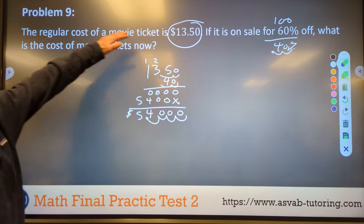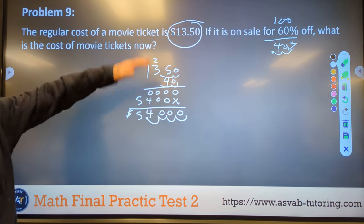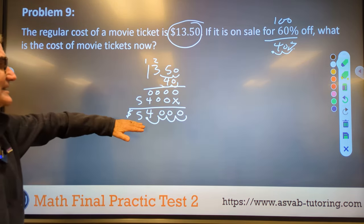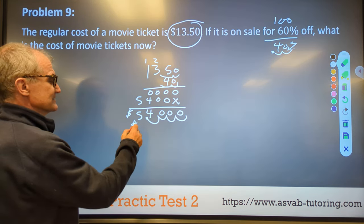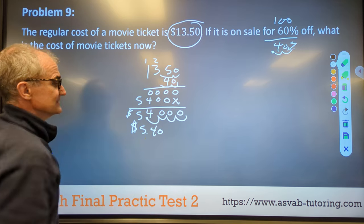Just the ballpark, I'm expecting it to be less than half of that. It's 60% off, so less than half of that. It's a quick check. $5.40 is your correct answer right there. That's the deal for a movie today.